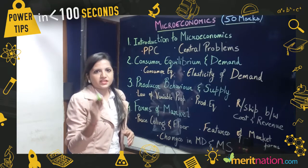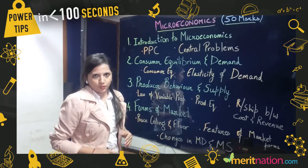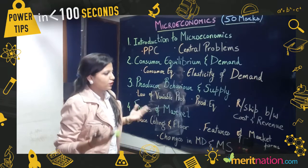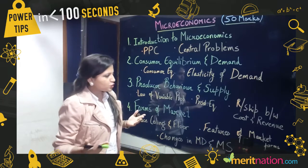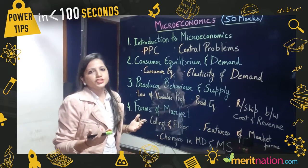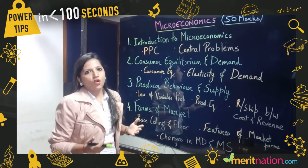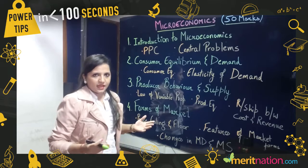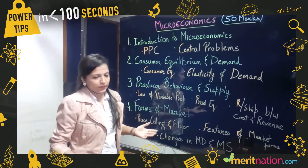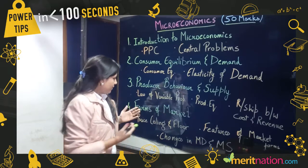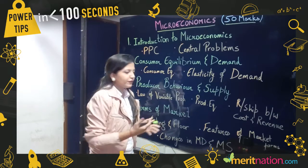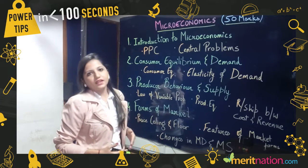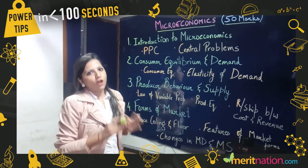In Chapter 3, the most important topics are the law of variable proportions, producer equilibrium, and the relationship between various cost and revenue curves. Lastly, the concepts of price ceiling and price floor, features of market forms, and changes in market demand and market supply are topics you cannot miss.